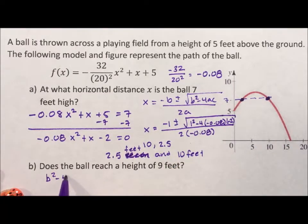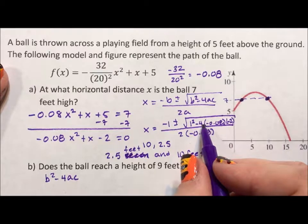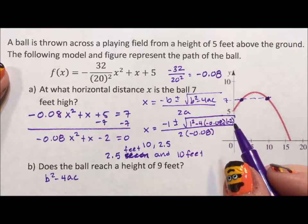the b squared minus 4ac is positive or 0. If it's positive or 0, we reach 9 feet. If it's negative, then we have a square root of a negative, which is not valid for a real world situation, which means we don't hit 9 feet.